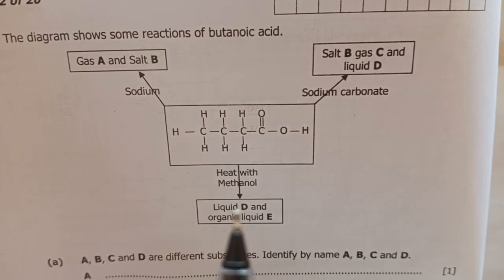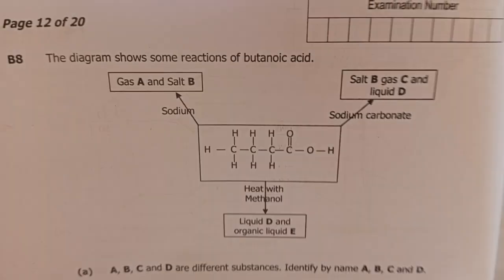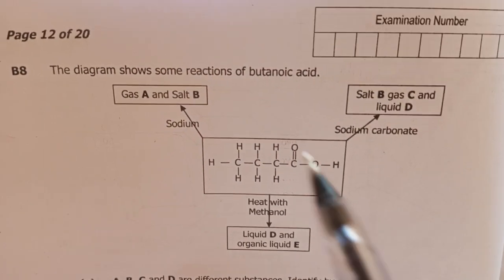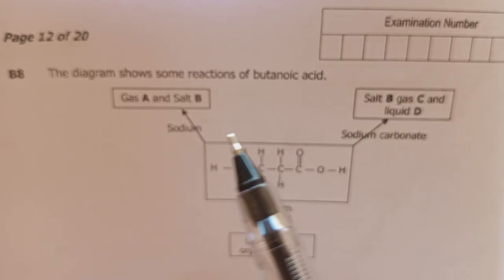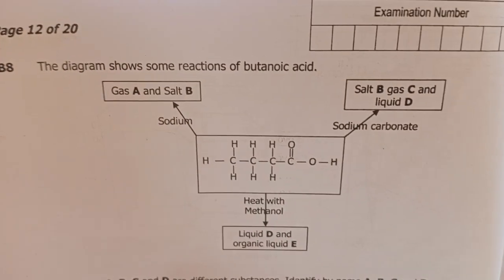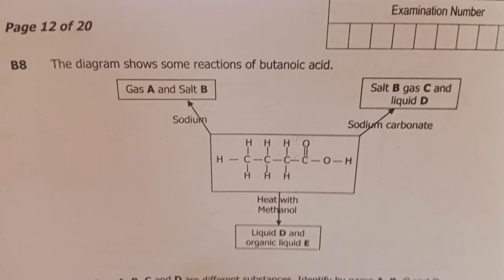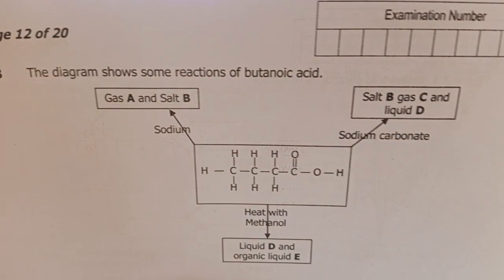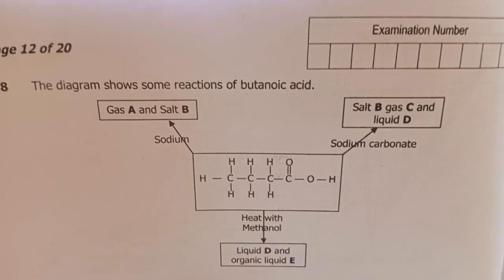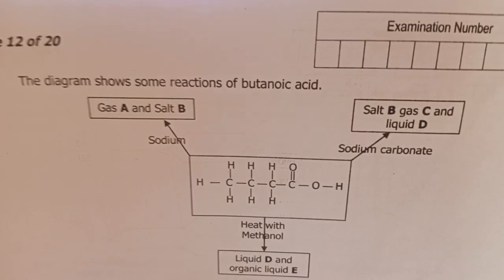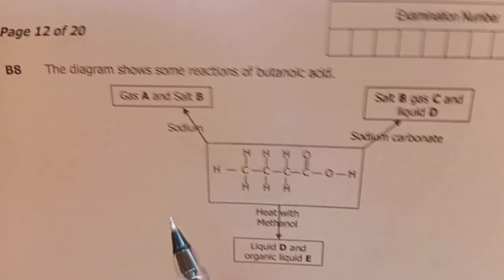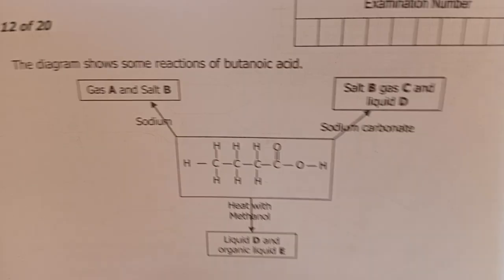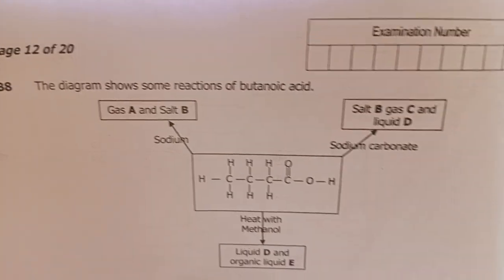What is gas A and salt B? We need to understand this is an acid. Each time an acid reacts with a metal, the product is always a gas and a salt. This is the same application you use on inorganic acids like hydrochloric acid or sulfuric acid. Acids react with reactive metals to produce salt and hydrogen gas.